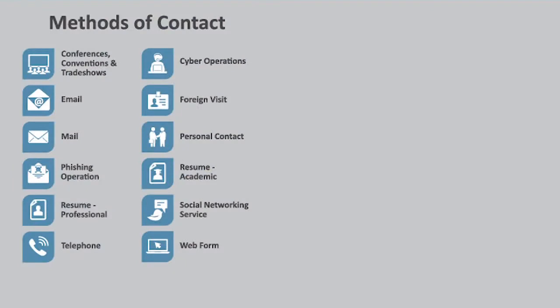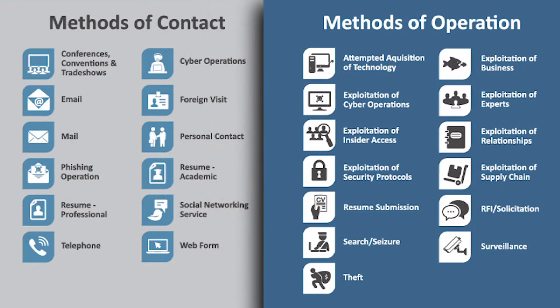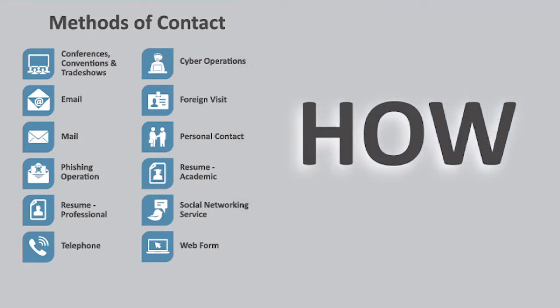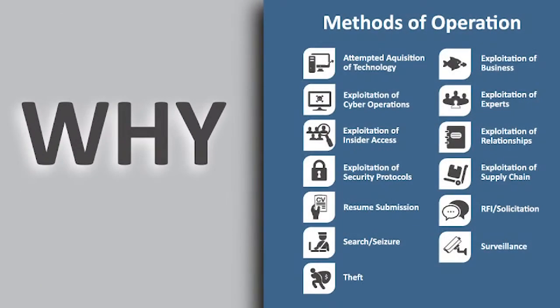These are the basic methods of contact and methods of operation employed by our foreign adversaries to achieve a collection objective. A method of contact is the avenue of approach or method of collection an adversary makes toward an asset, and the method of operation denotes the aim or objective of the foreign adversary. Our adversaries achieve this objective through 13 methods of operation and 12 methods of contact, for a total of 156 possible techniques used to collect sensitive information.